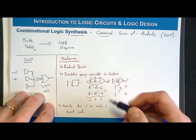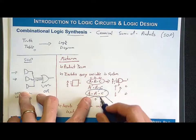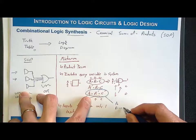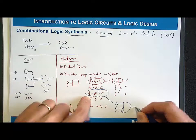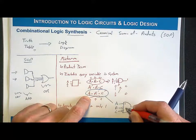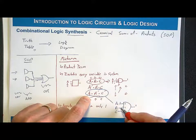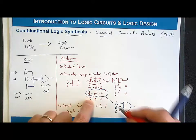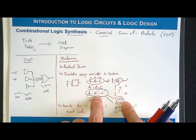If we wanted to make a min term that asserts for input code 1, 0, 0, we would have A (not inverted), B̅ (inverted), and C̅ (inverted), all ANDed together. Since the AND gate requires all 1s at its inputs to assert, A must be 1, and B and C must each be 0 — going through their inverters — to produce 1s at the AND gate inputs. So this min term corresponds to input code 1, 0, 0.